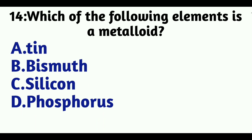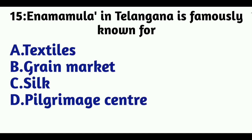Question 14: Which of the following elements is a metalloid? Option A: Tin, Option B: Bismuth, Option C: Silicon, Option D: Phosphorus. The answer is Option C, Silicon.